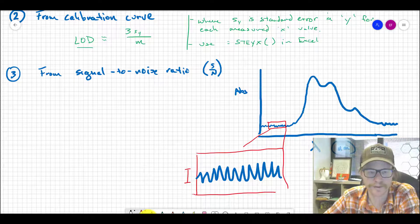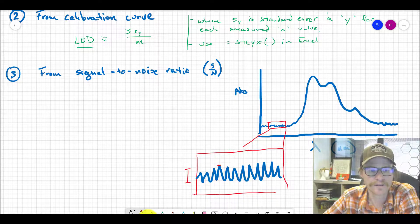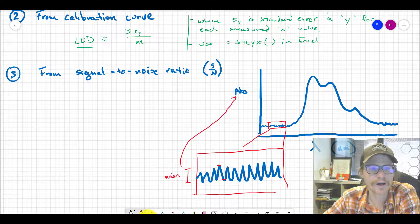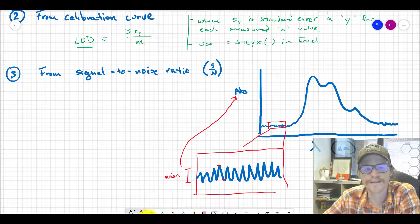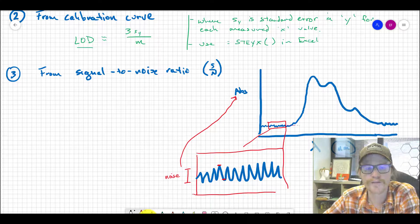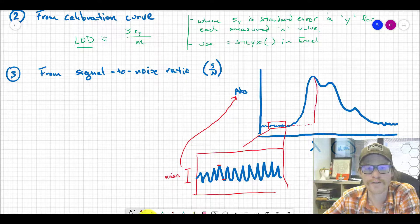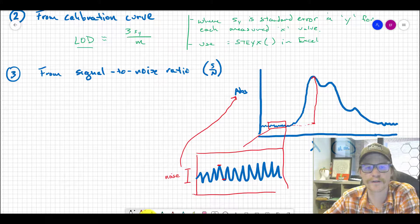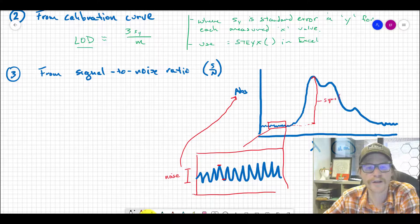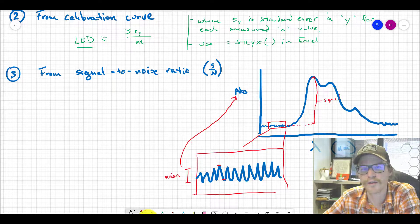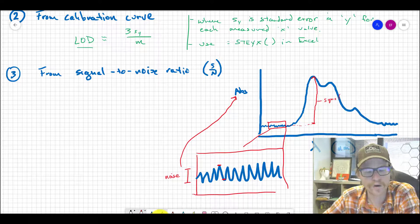From the peak to the trough—that's the noise measured in our response units, absorbance, on the y-scale. The signal would be from the centroid of that baseline all the way up to wherever the maximum signal is for our analyte. If you take the signal in absorbance units divided by the noise, that's the signal-to-noise ratio.